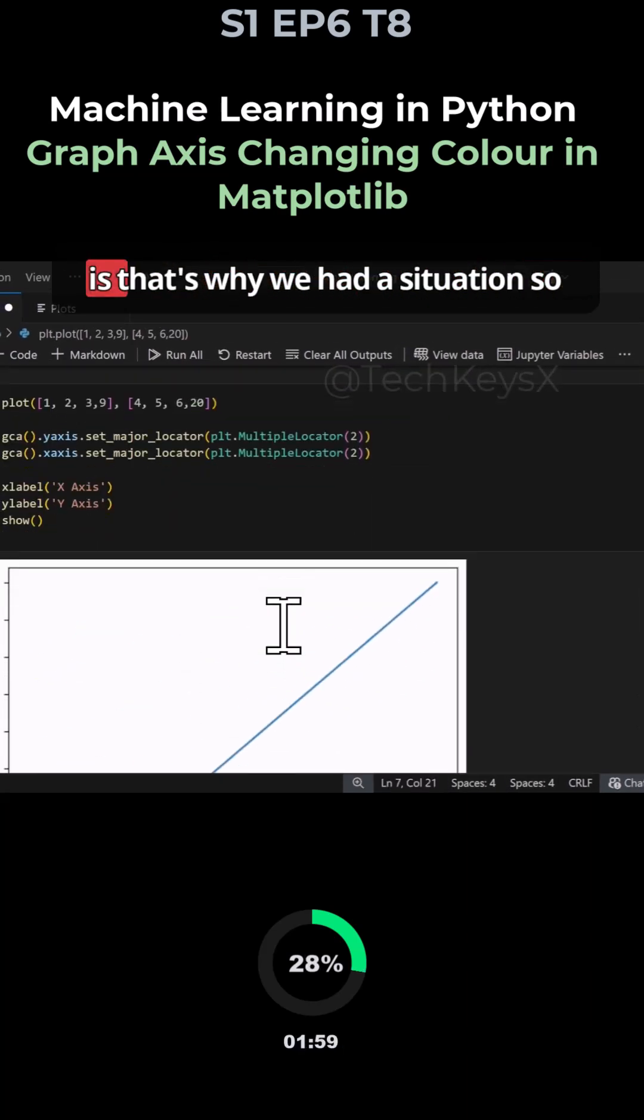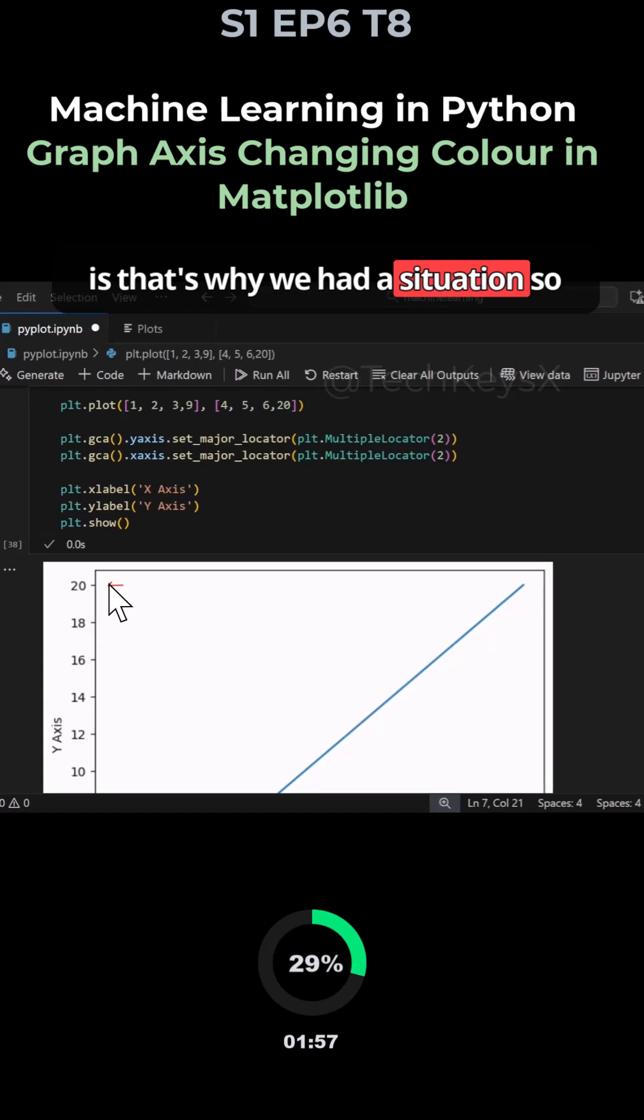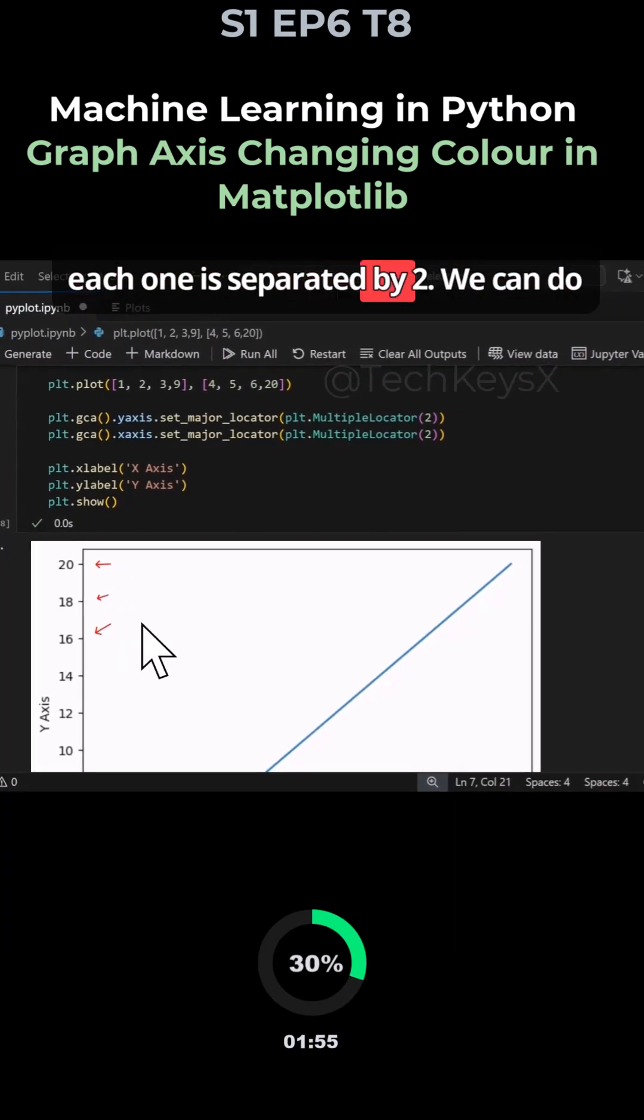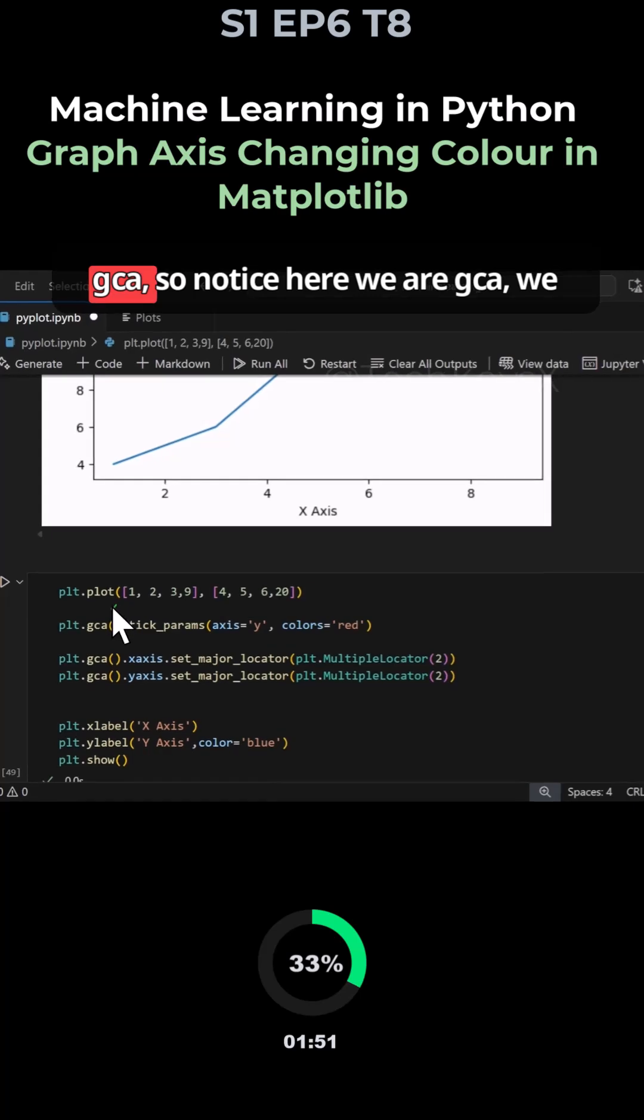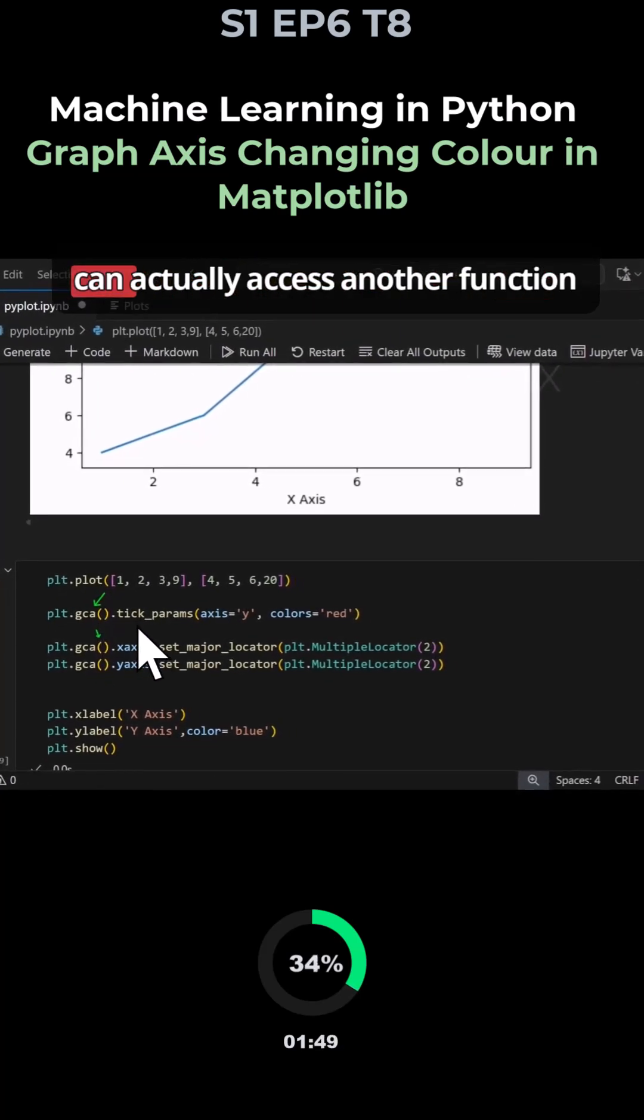So what we can do is that's why we had situations so each one is separated by two. We can do the same thing over here, so using gca, notice here we had gca, we can actually access another function.